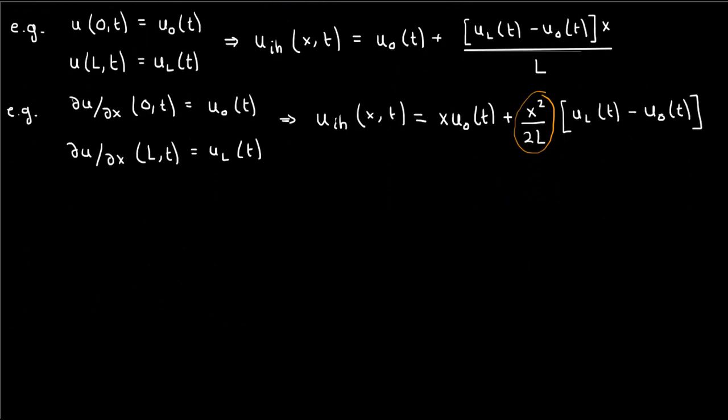Because this inhomogeneous component is such that it fully satisfies these inhomogeneous boundary conditions, the second component remaining, which we labeled the homogeneous component, must fully satisfy the corresponding homogeneous boundary conditions. But I'm going to show you that the PDE the homogeneous component satisfies isn't necessarily the same as the original PDE that we had.